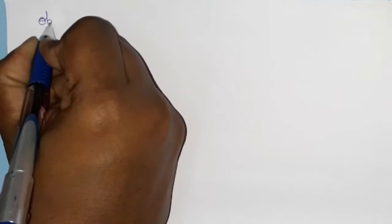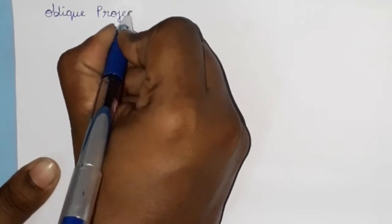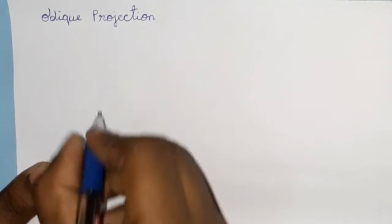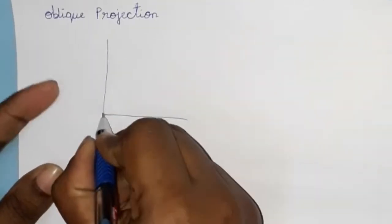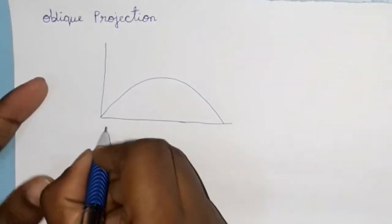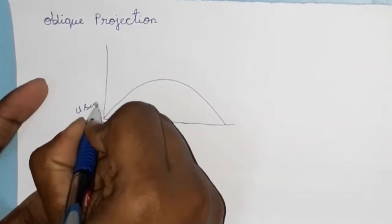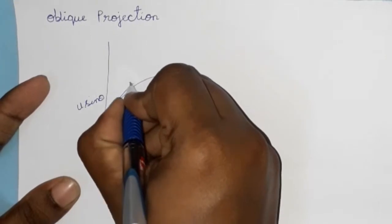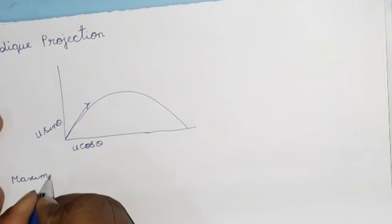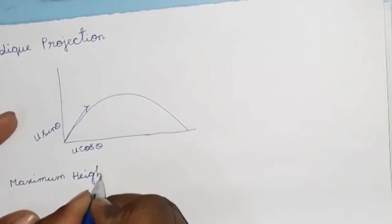Now we will discuss about oblique projection further. Using the previous diagram with components u·cosθ and u·sinθ, now we have maximum height. The body is moving in the upward direction and reaches a maximum height H.